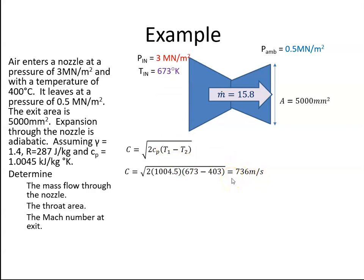The speed of sound A equals √(γRT), using whatever temperature is at this station. So the speed of sound at this station is √(1.4 × 287 × 403)—this was the temperature we had previously calculated. That's 402 m/s. I can now put in my formula for the Mach number: C over A, which is 736 over 402, and that works out to be Mach 1.8.